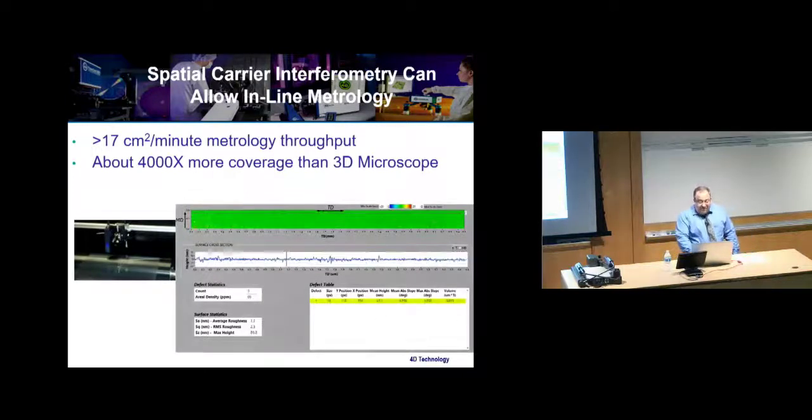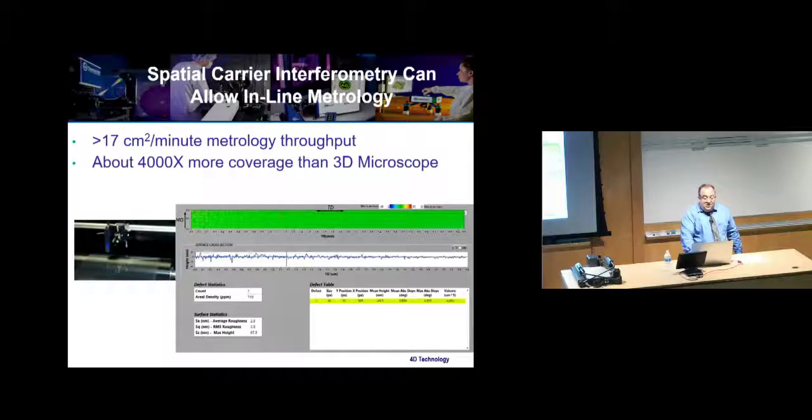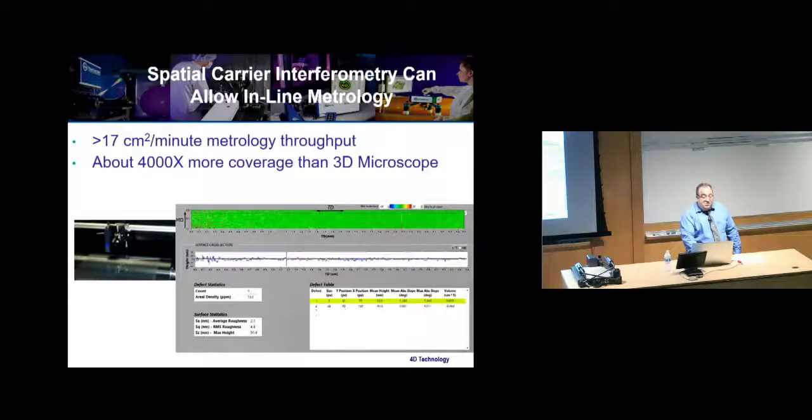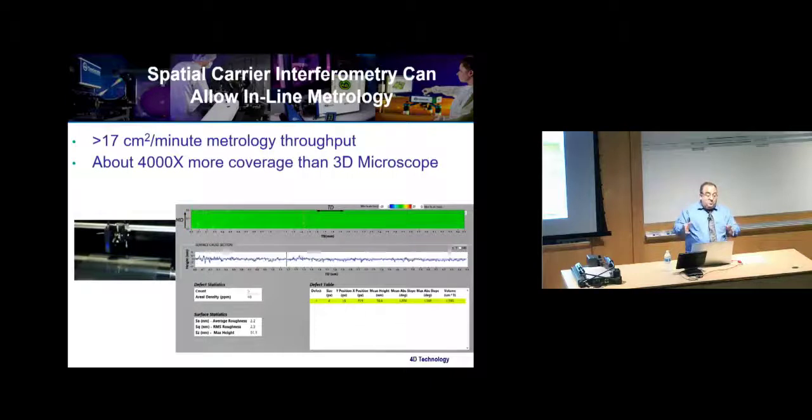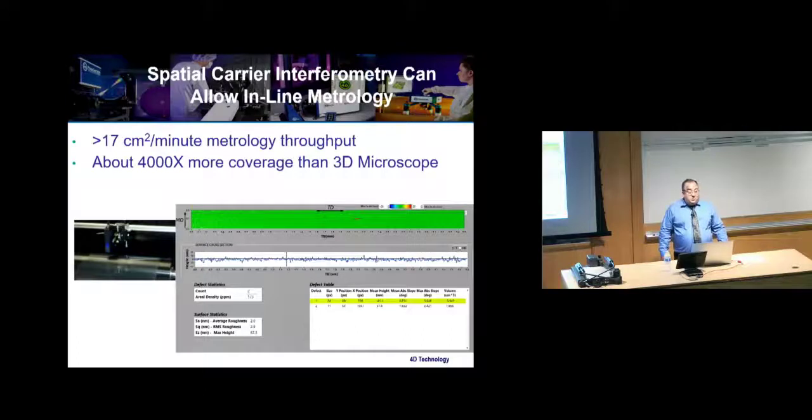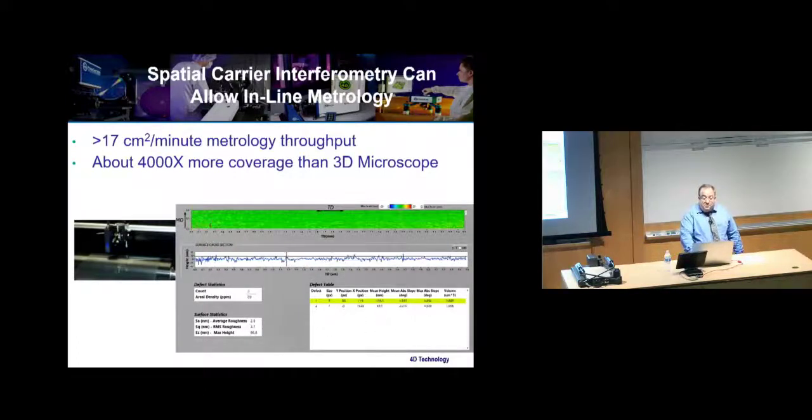It's pretty cool, and vibration is no issue. You need things to stay within a given focus range. In this case, it was about 50 microns before the fringes left the camera. But you can get huge amounts of data. With a system like this, if you compare it to a 3D microscope system that's going to take single fields of view, you can get 4,000 times more coverage in a given unit of time than you do with a microscope-based system.